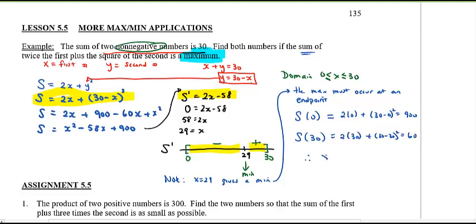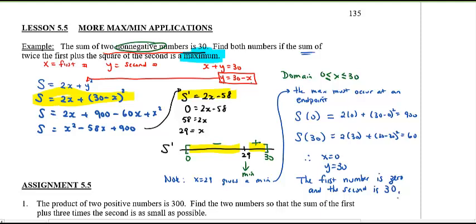Therefore x equals 0 and y must be 30, giving a maximum of 900. The first number is zero and the second is 30. Make sure you read the question carefully to determine if you need a max or min, and always double-check your endpoints. Now you're done.